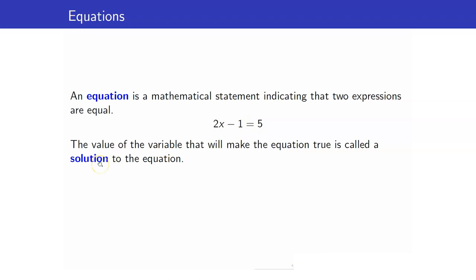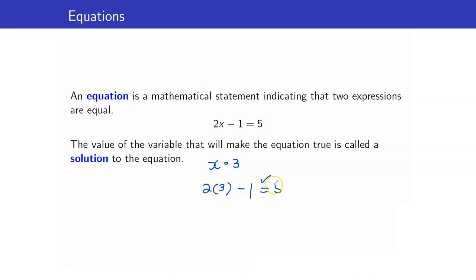The value of the variable that will make the equation true is called a solution to the equation. So in our example here, a solution would be x equals 3, because if x is equal to 3, you have 2 times 3 when you substitute that — that is really equal to 5. So therefore, x equals 3 is a solution.